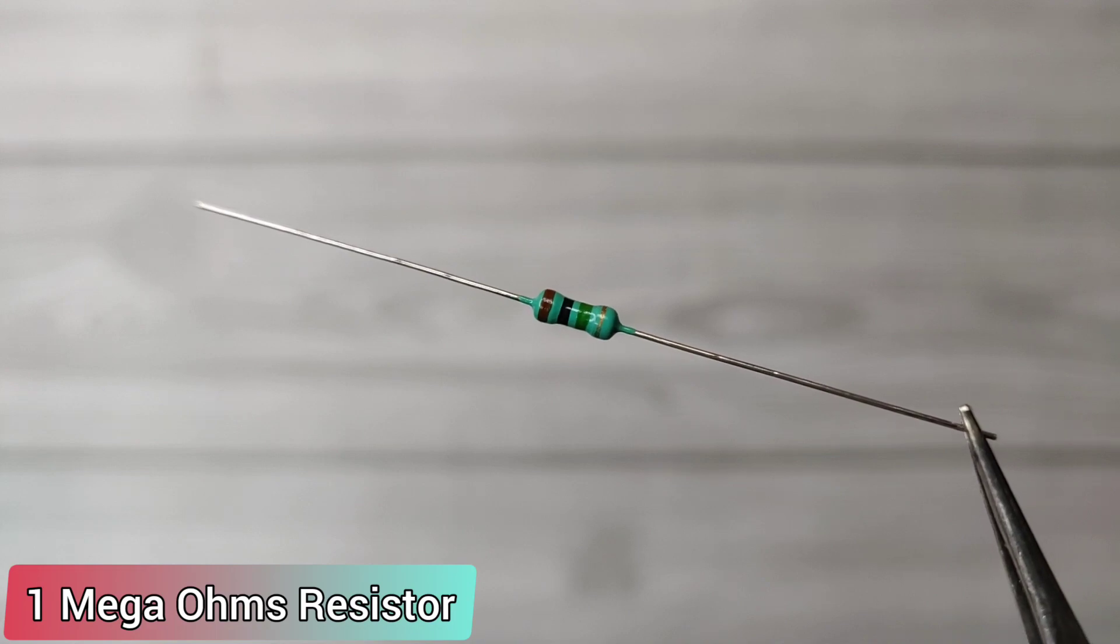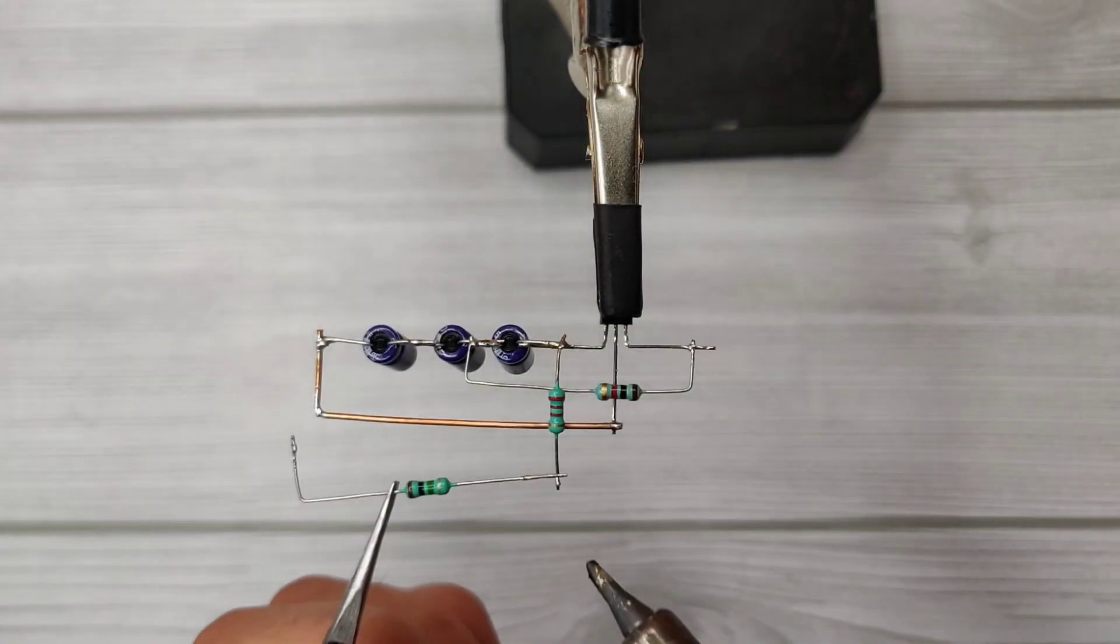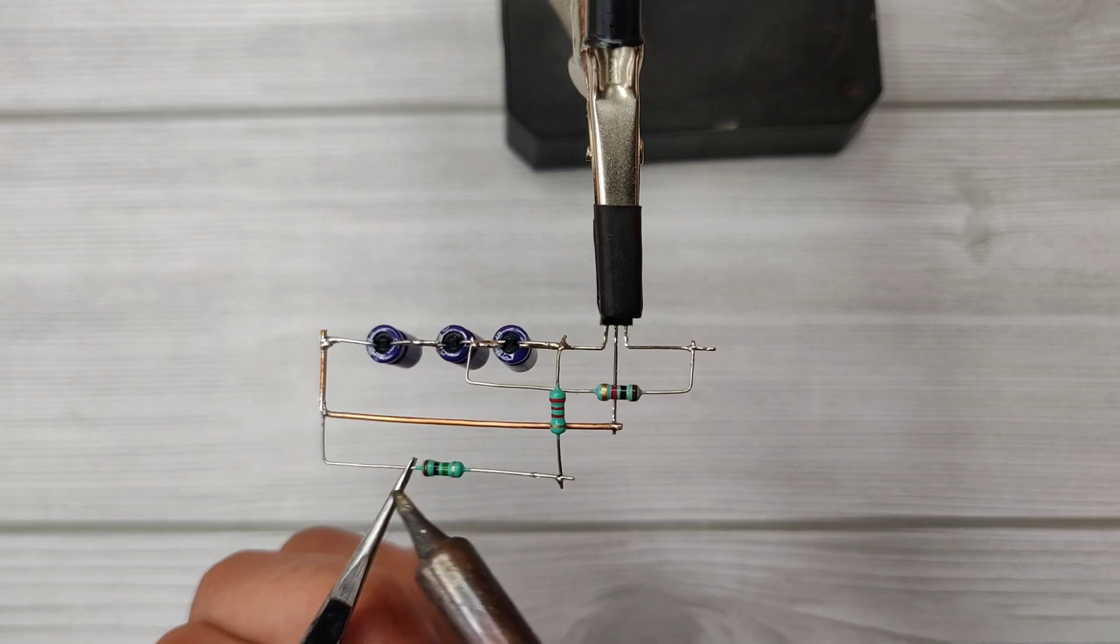Take a 1 mega ohm resistor. Solder it between the 2.2k resistor and the base of the transistor.